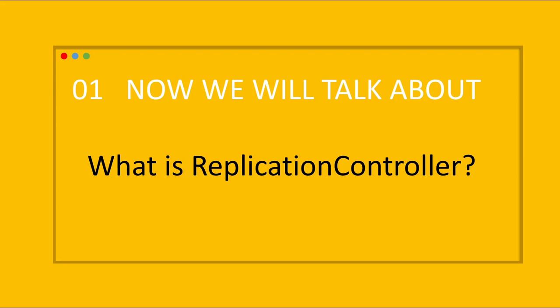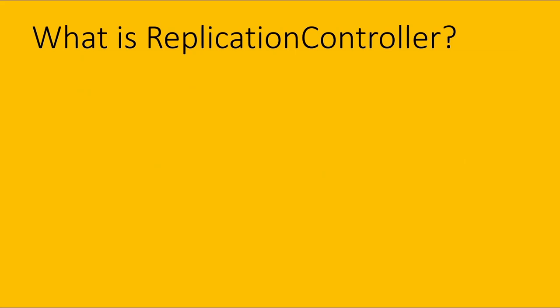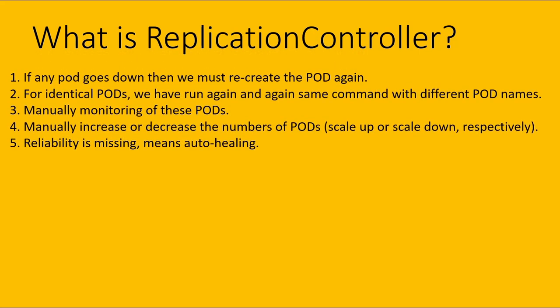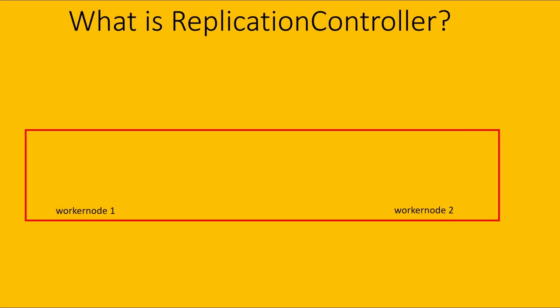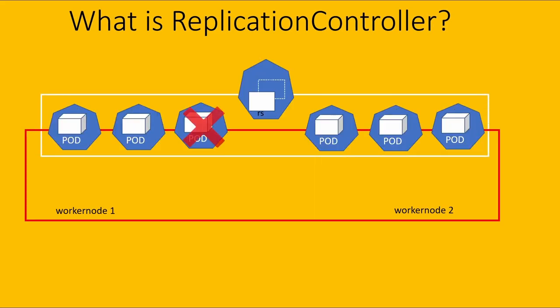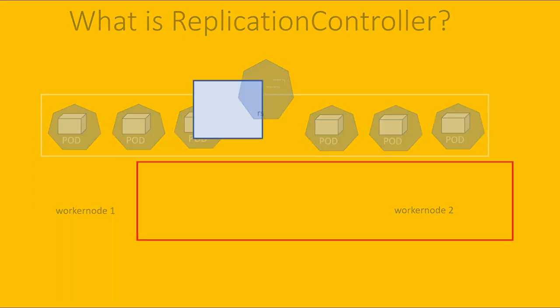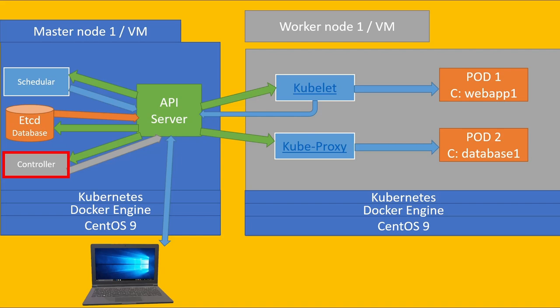So our first topic is: what is a replication controller? For all of these problems, Kubernetes came up with a solution called the replication controller. A replication controller ensures that a specific number of pod replicas are running at any one time. In short, if we create a pod through the replication controller and any pod goes down, then the replication controller will create it automatically. The replication controller is a part of the controller. I have already explained the functionality of the controller — if you haven't watched that video, you may click on the Kubernetes basics video; I already added the link in the description.